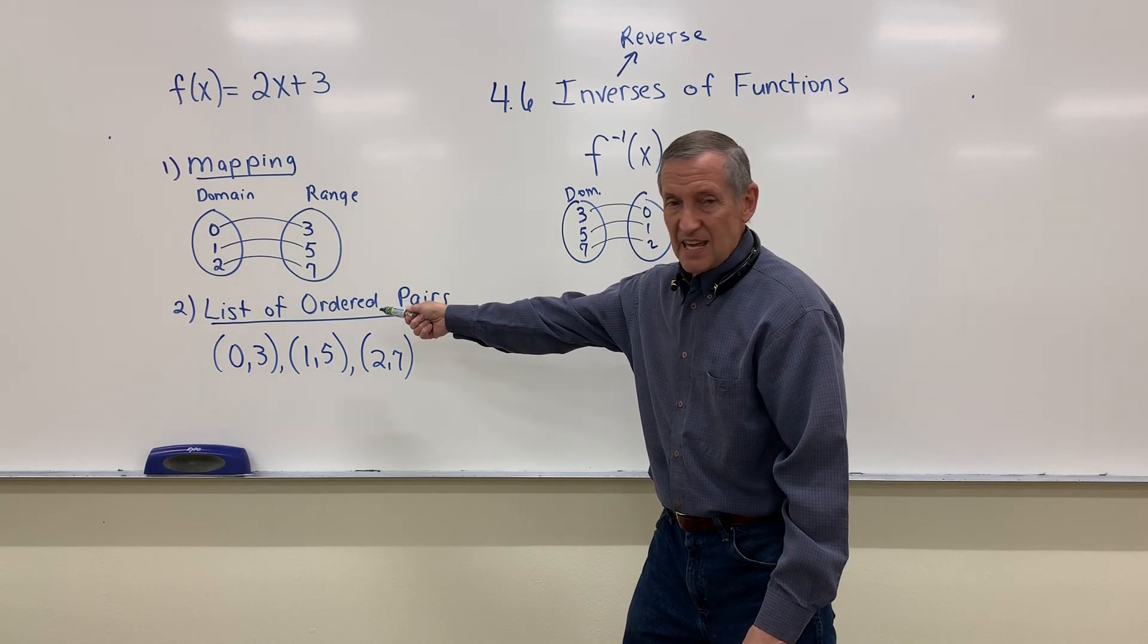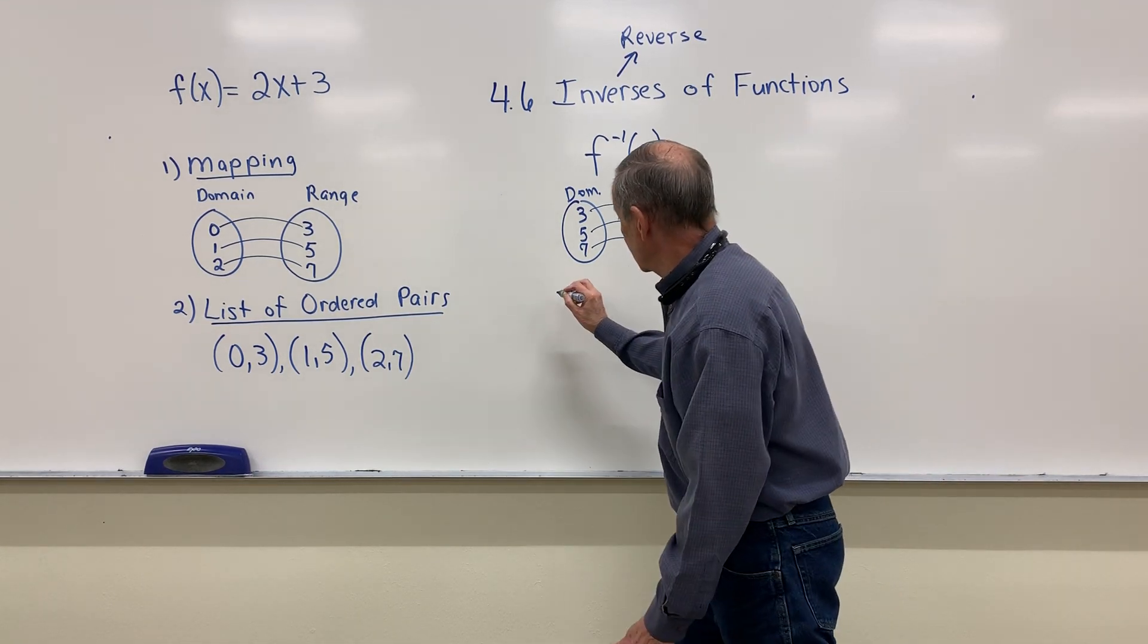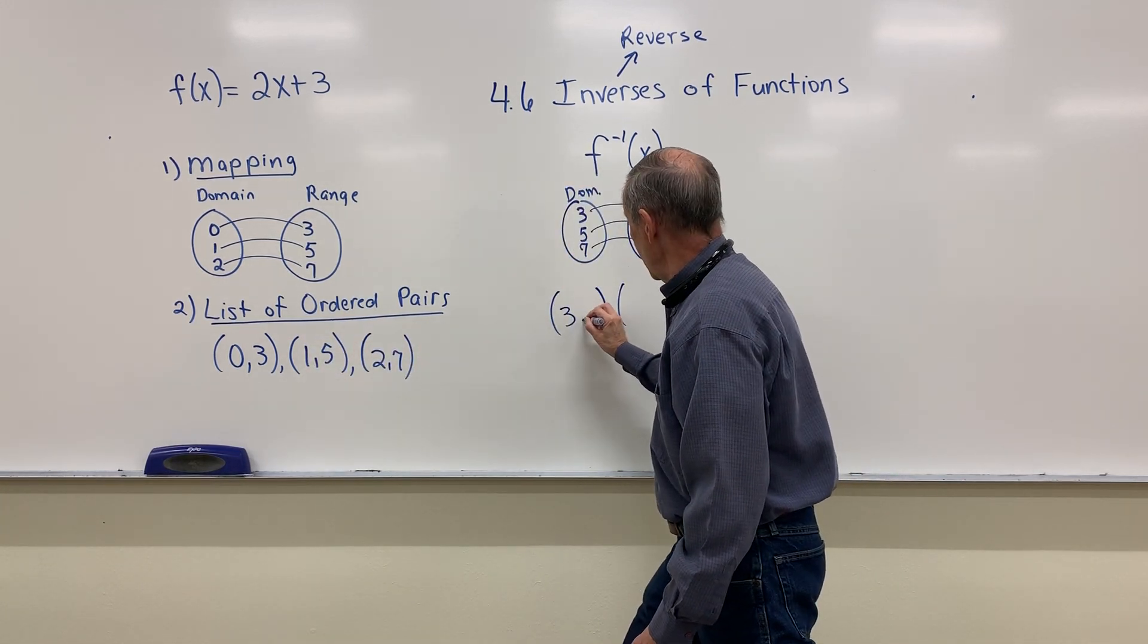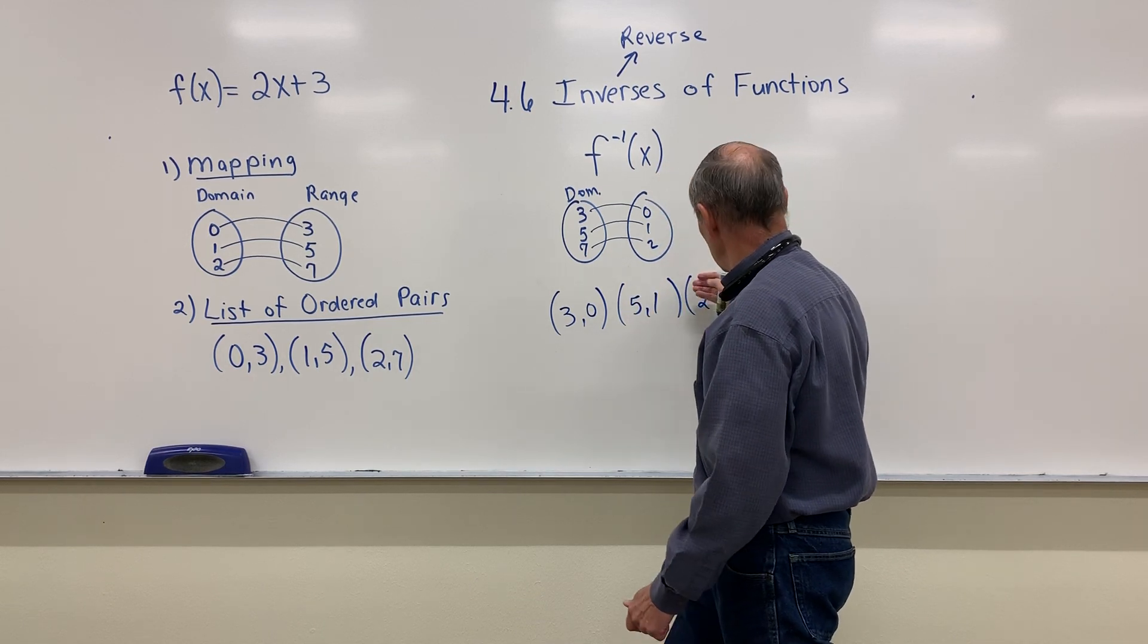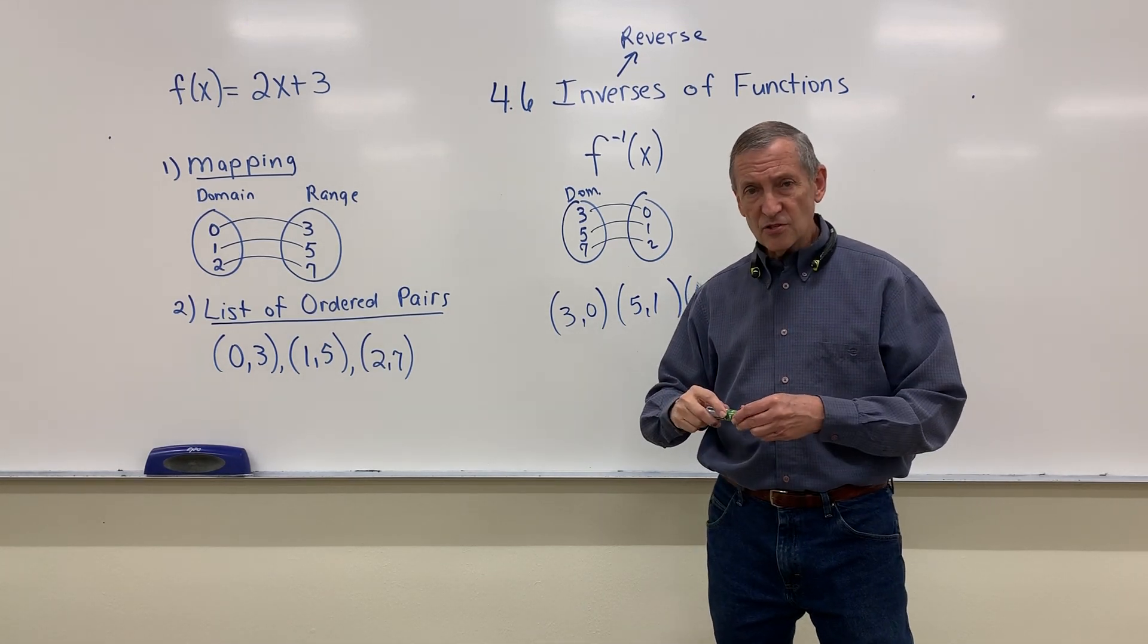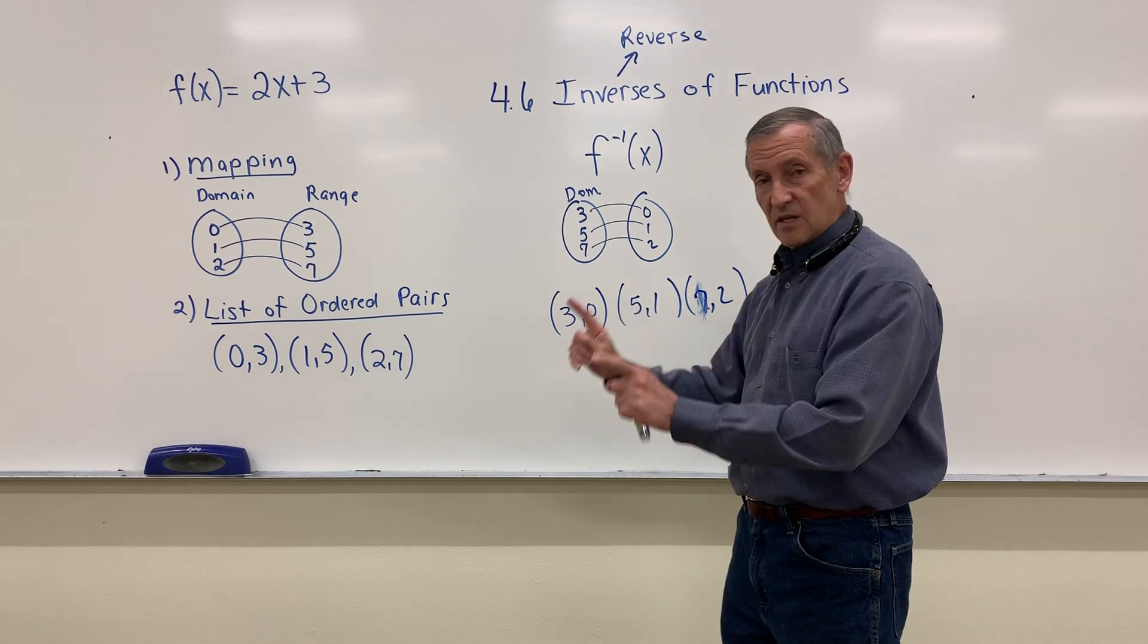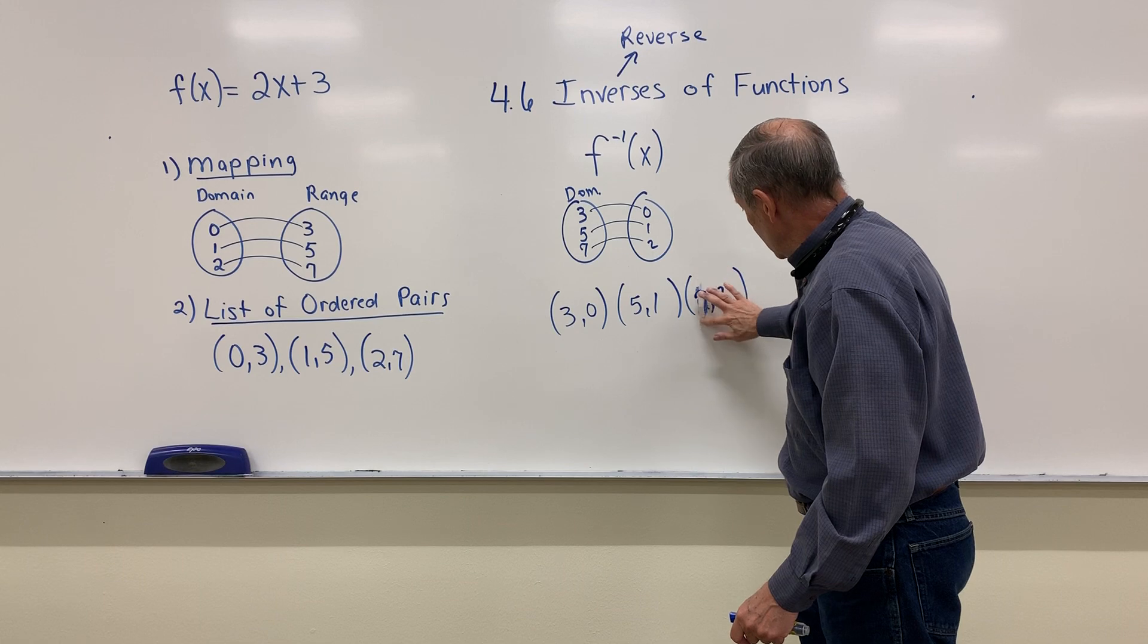Well, if I'm taking the inverse or the reverse of a list of ordered pairs, you get it. I simply reverse the ordered pairs. Every xy becomes a yx. 3, 0, 5, 1, 7, 2. Now, your first Hawks problem says, hey, here's some ordered pairs. Show me what the inverse of the function looks like. You simply switch every xy to a yx, and that's the inverse of the function.